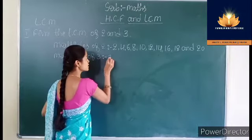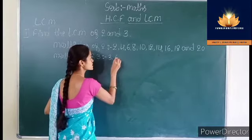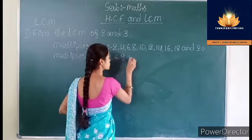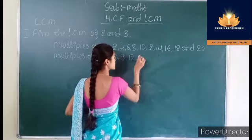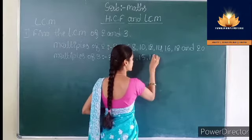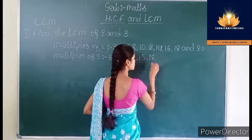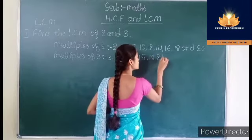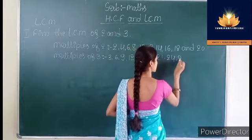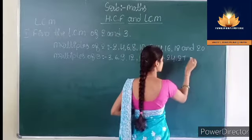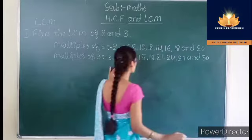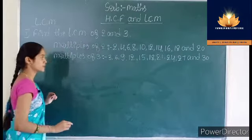Multiples of 3: 3×1=3, 3×2=6, 3×3=9, 3×4=12, 3×5=15, 3×6=18, 3×7=21, 3×8=24, 3×9=27, 3×10=30. These are the multiples of 3.